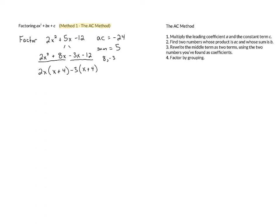Now our last step is to pull out the GCF of the two groups, which is x plus 4, and then in parentheses put the leftovers 2x minus 3, and this is our final answer.